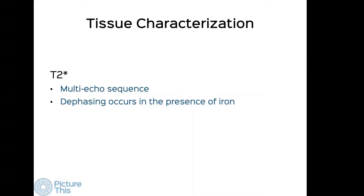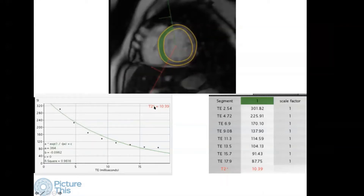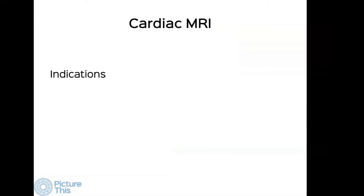The last tissue characterization sequence is T2 star. To summarize: late gadolinium enhancement after gadolinium injection is for infarction and fibrosis; T1 mapping is for infiltration and fibrosis; T2 mapping is for edema; and T2 star is for iron mapping. T2 star is typically used in thalassemic patients on blood transfusions to look for iron deposition in the heart. If the T2 star value is less than 20 milliseconds, there is iron in the heart. Interaction here is primarily with hematologists, not cardiologists, unless the patient has heart failure.